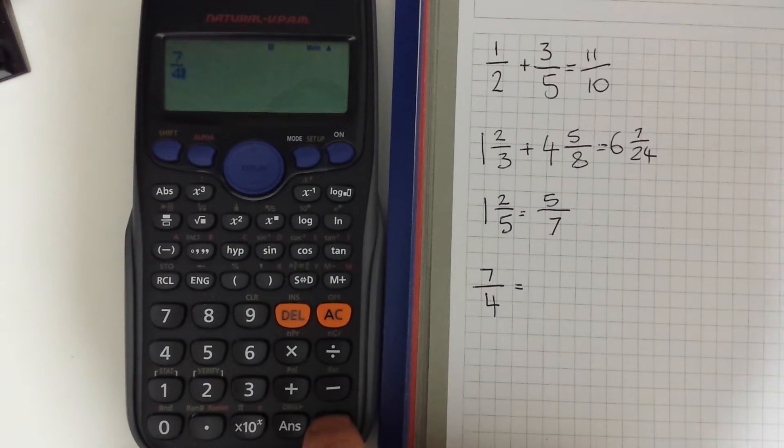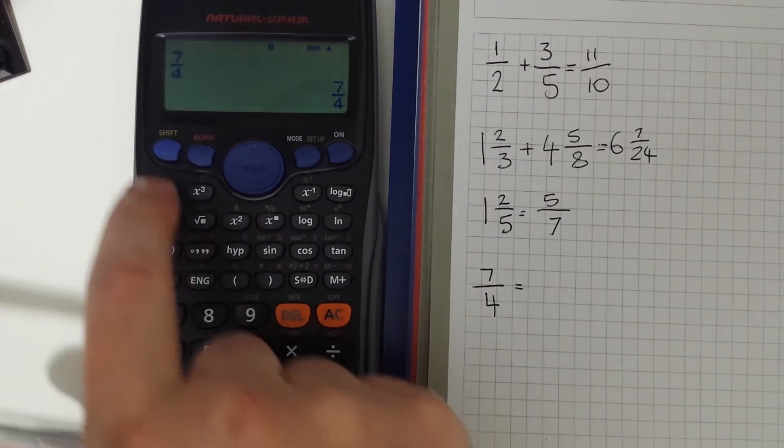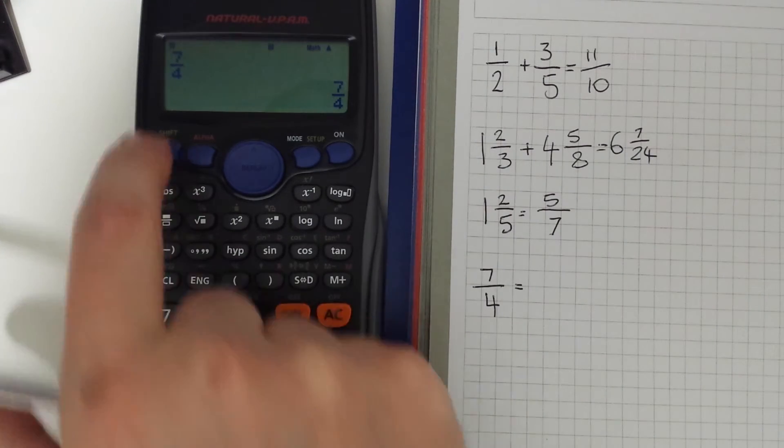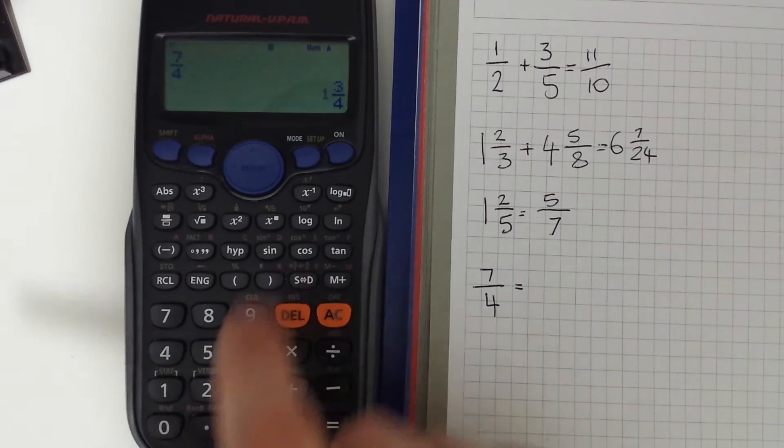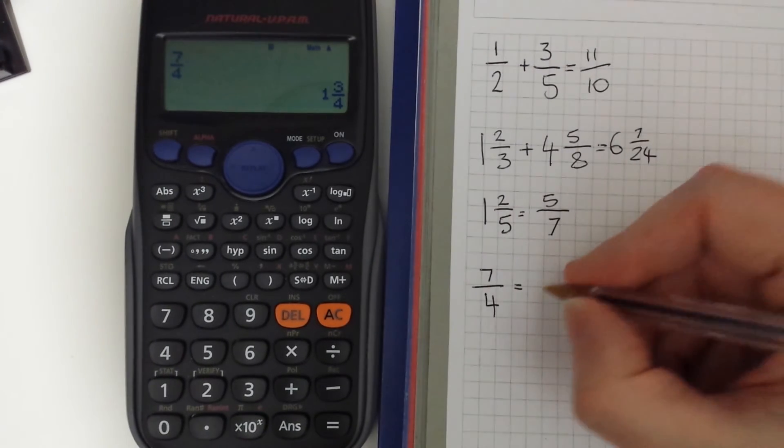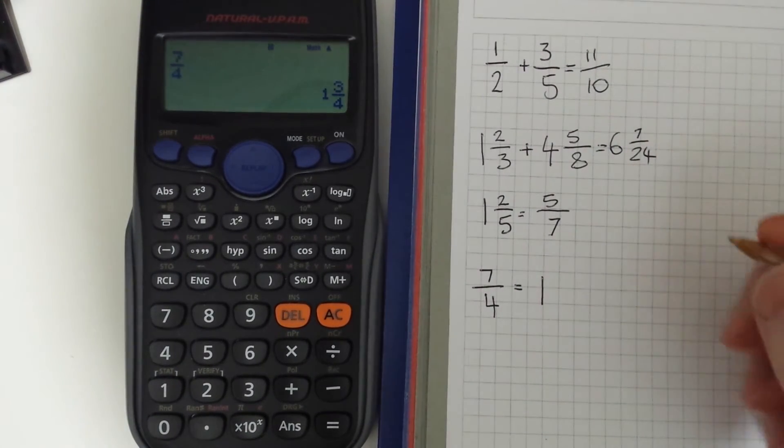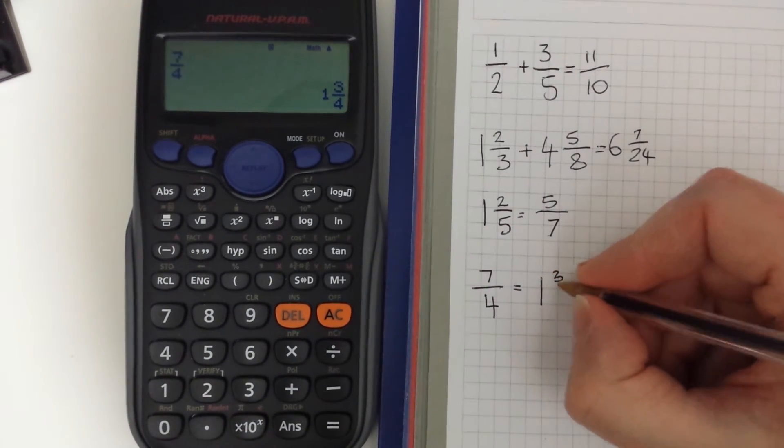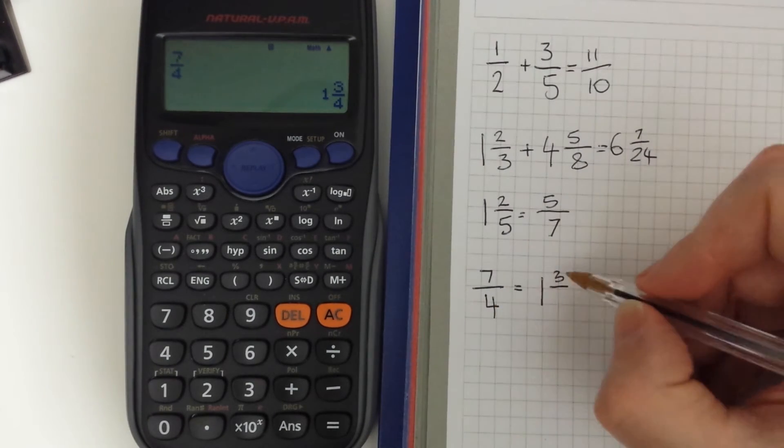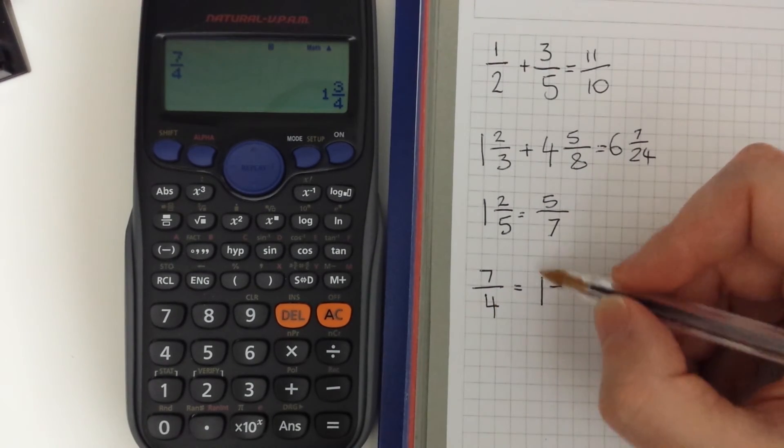So when we press equals this time nothing will happen, but when we do the conversion shift with the sd key we'll get 1 that's 1 full 4 and then 3 because the 4 and the 3 make up 7.